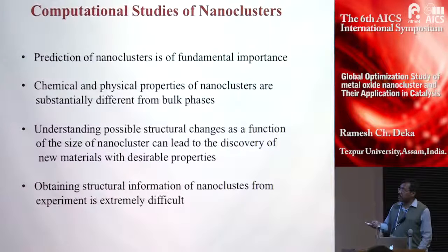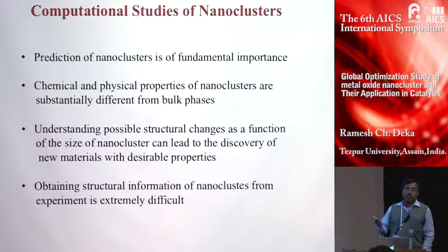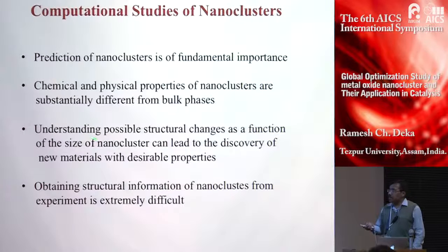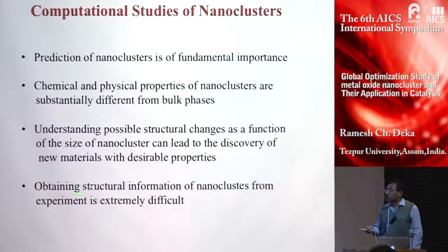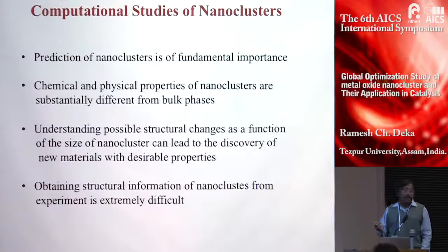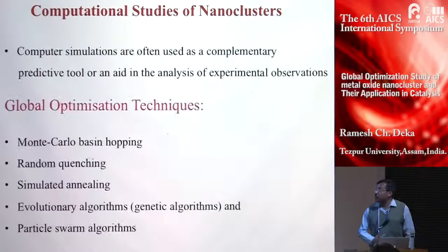The prediction of nanocluster structure is of fundamental importance using computational methods. The chemical and physical properties of nanoclusters are substantially different from the bulk phase. Understanding possible structural changes as a function of cluster size is important — the number of particles can vary from 3 to 100, and the structure changes depending on size. Obtaining structural information of nanoclusters from experiment is extremely difficult, so we need to use computational techniques.